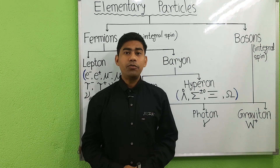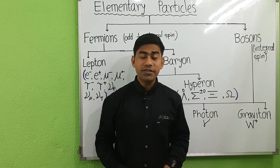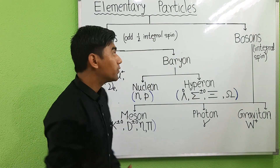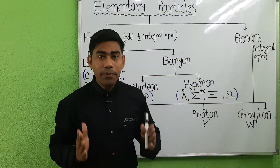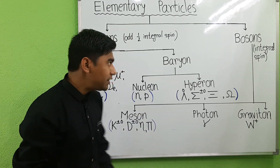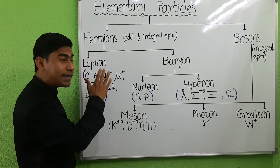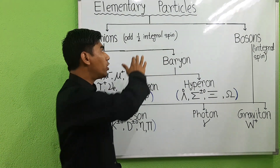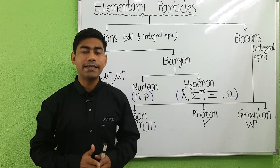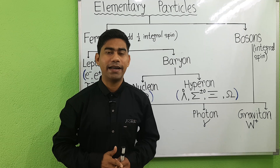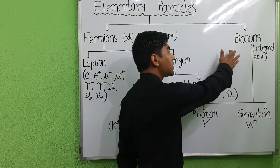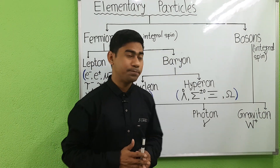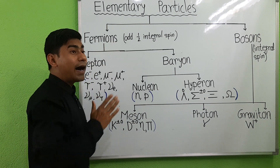Hello everyone, welcome to this lecture. I am Om Landas. Today I will discuss about elementary particles. Elementary particles are divided into two classes: first is fermions and second is bosons. Fermions are odd half-integral spin particles with antisymmetric wave function, and bosons are integral spin particles with symmetric wave function.